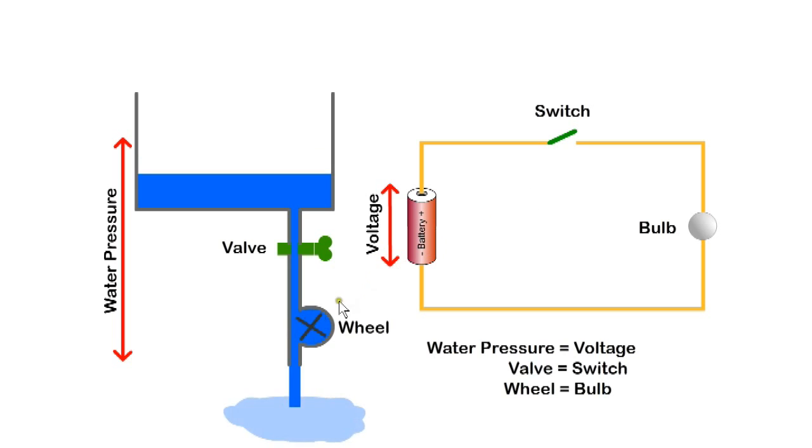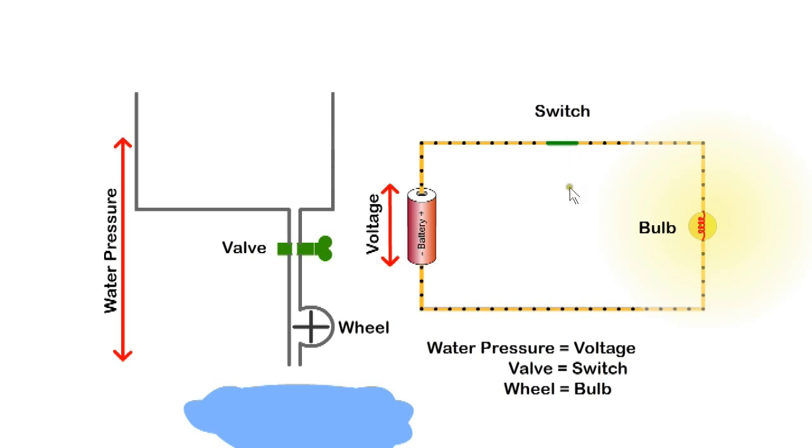The valve allows the water to flow which turns the wheel. The switch provides a continuous path for the current to flow and the resistance of the lamp produces heat and light. When the switch is opened, the circuit is broken and the current ceases to flow.